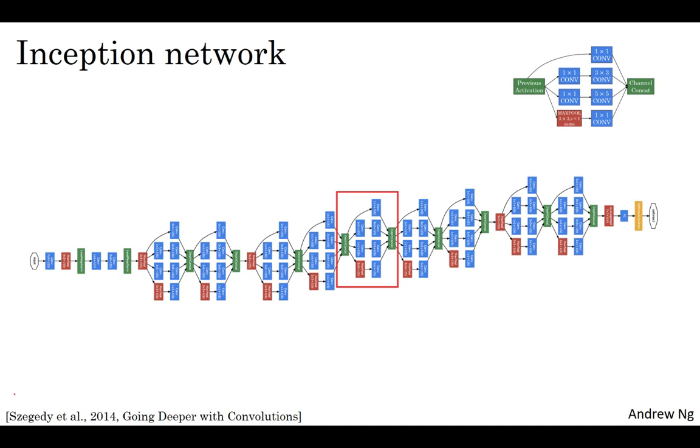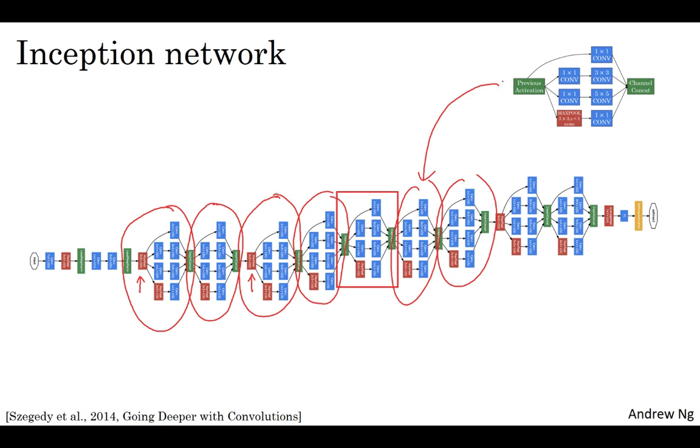And subject to little details I won't discuss, this is another inception block, this is another inception block. There are some extra max pooling layers here to change the dimension of the height and width. But that's another inception block. And then there's another max pool here to change the height and width. But basically, there's another inception block. But the inception network is just a lot of these blocks that you've learned about, repeated to different positions of the network. So if you understand the inception block from the previous slide, then you understand the inception network.